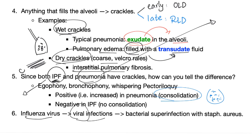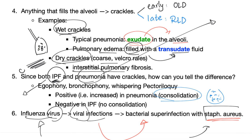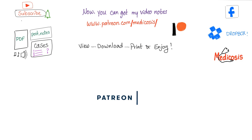Influenza virus can lead to viral pneumonia, and then bacteria can jump on top — called bacterial superinfection — usually Staph aureus. You should not give antibiotics for influenza virus alone since antibiotics are antibacterial. But when bacterial superinfection develops, you should give antibacterials.